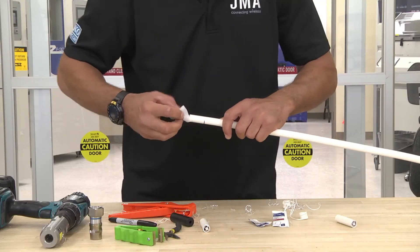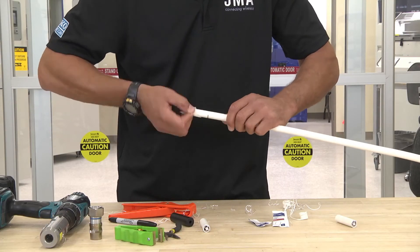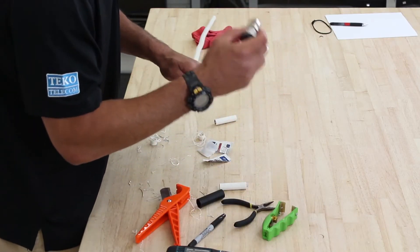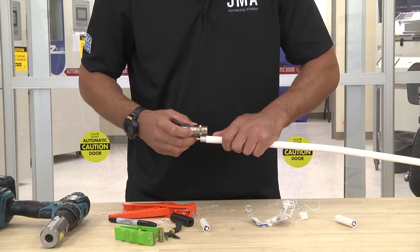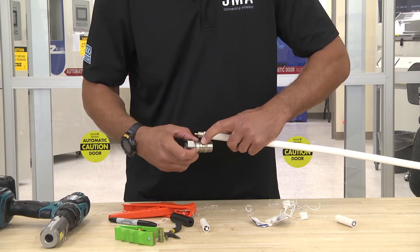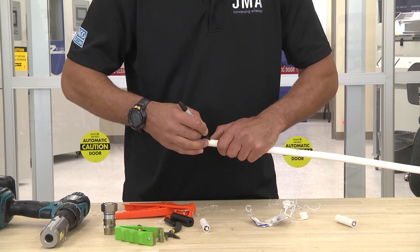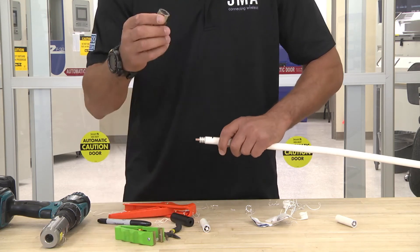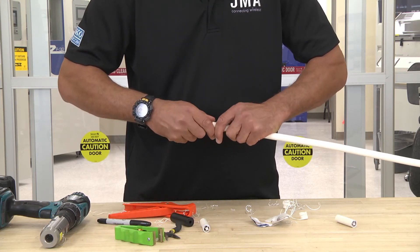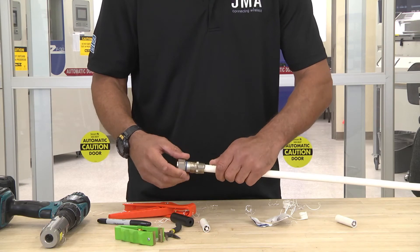Then we want to take our alcohol wipe and clean off the center conductor. Now we want to take our connector and mark it onto the cable. So we align the outer conductor with the line on the connector sleeve. Make your mark, two clicks, one, two, and it's right at the mark.